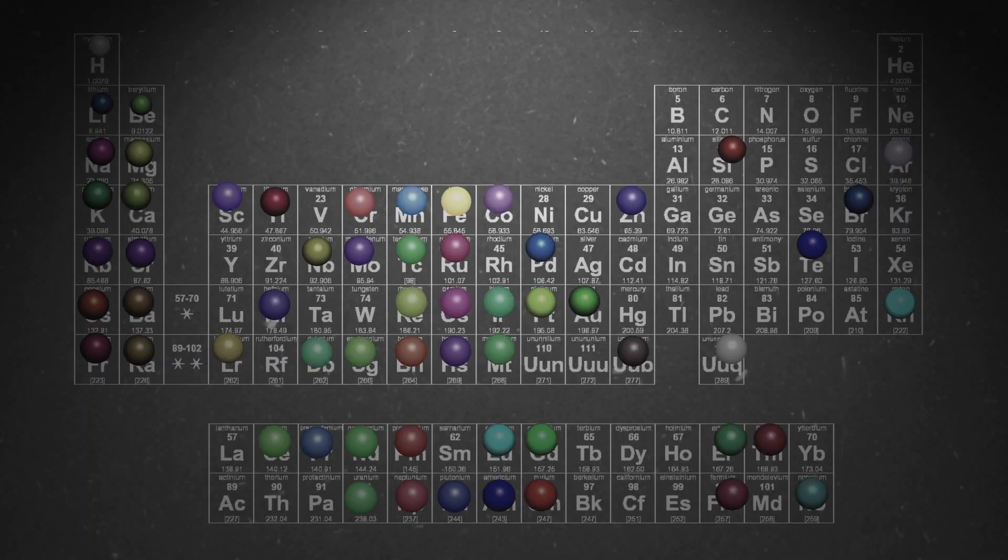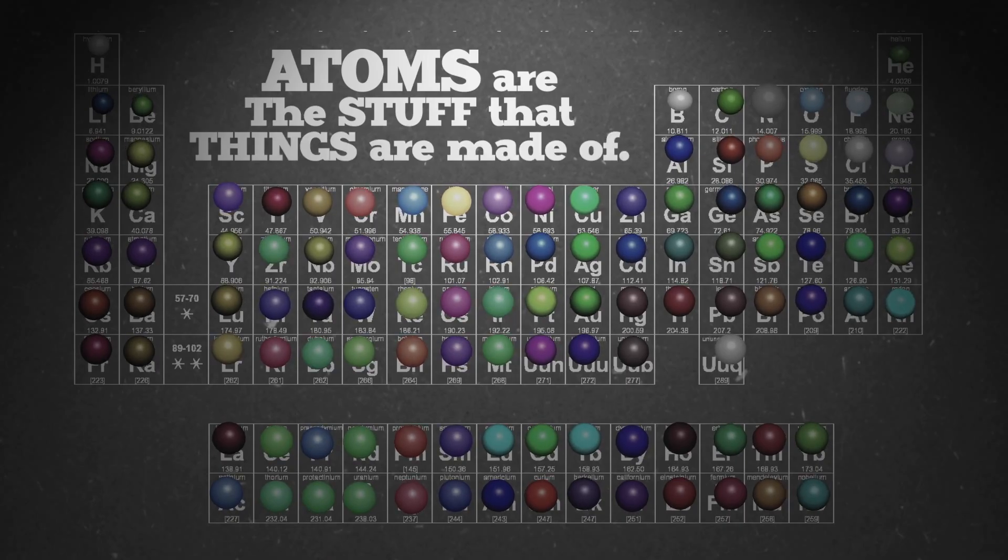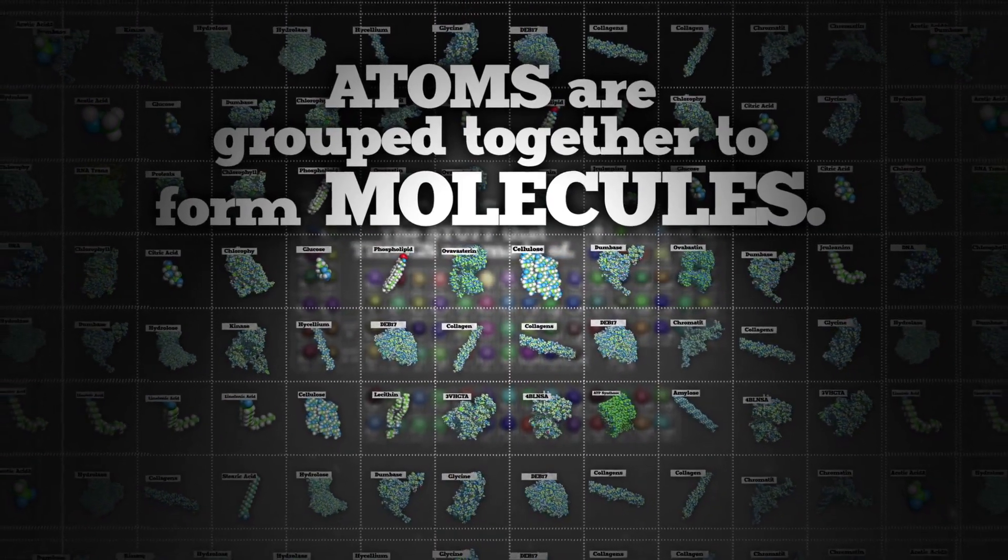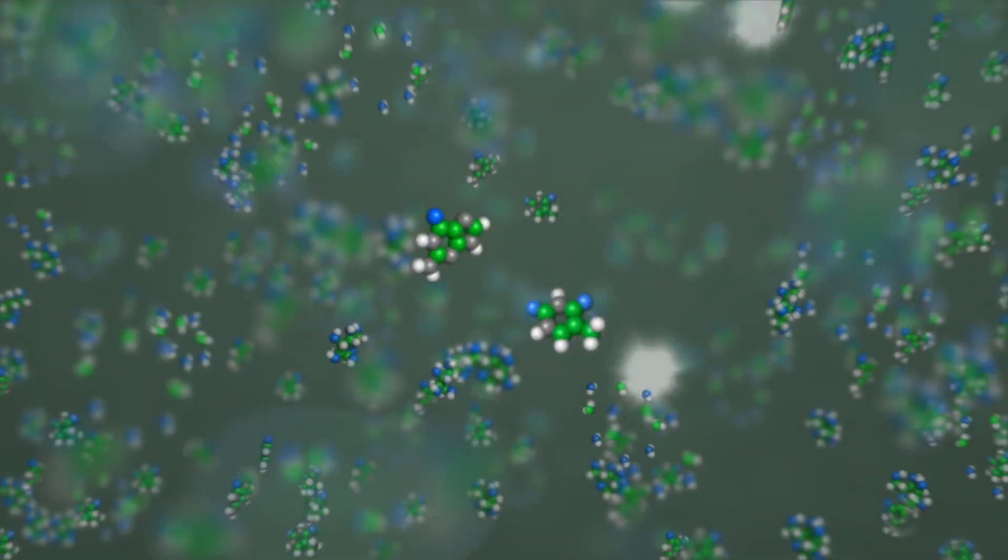So, to recap, everything is made of atoms. They are the stuff that things are made of. Atoms are grouped together in different ways to form molecules. These molecules are constantly being combined, broken apart, and recombined. They get thrown into mixtures, separated, remixed, over and over and over again.